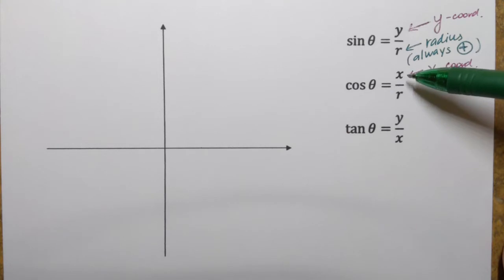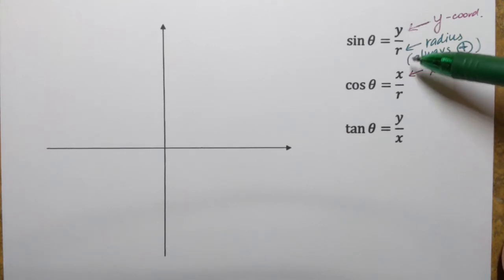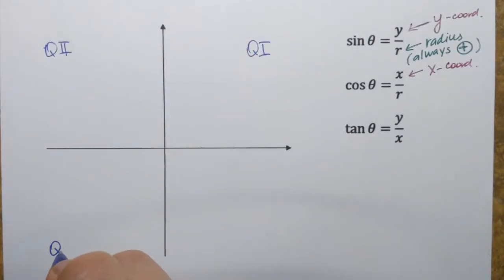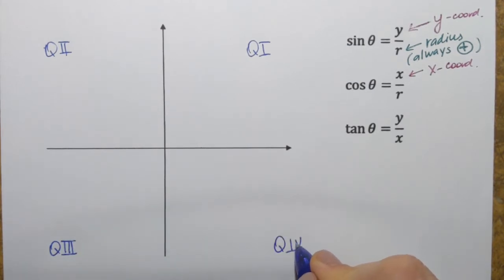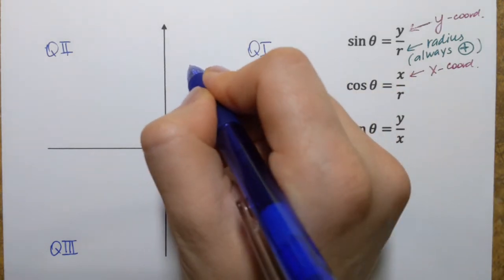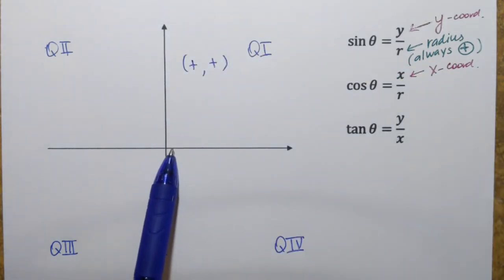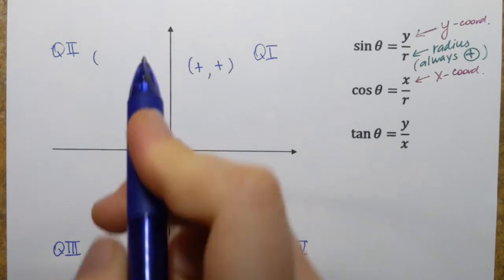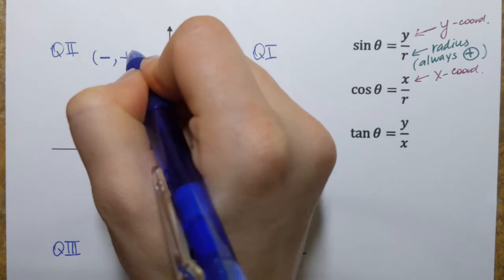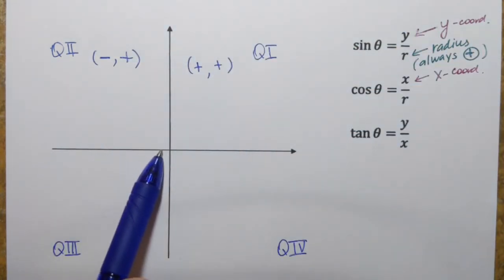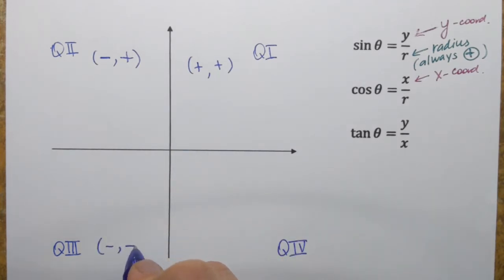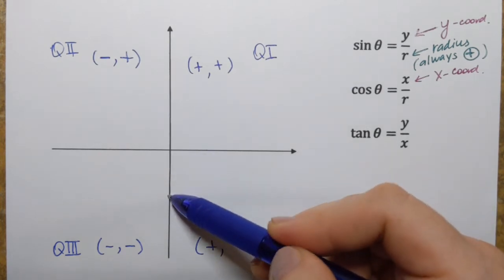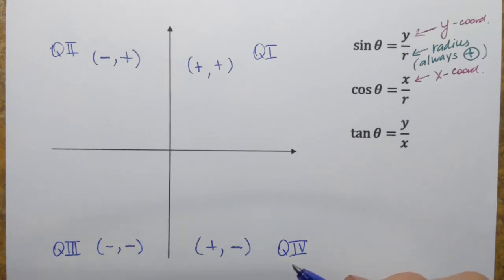However, coordinates of points can be either positive or negative, and that depends on which quadrant the point is in. There are four quadrants: quadrant 1, quadrant 2, quadrant 3, and quadrant 4. In quadrant 1, both coordinates are always positive — it corresponds to the positive x-axis and positive y-axis. In quadrant 2, x-coordinates are negative and y-coordinates are positive. In quadrant 3, both x and y coordinates are negative. And in quadrant 4, x-coordinates are positive and y-coordinates are negative.